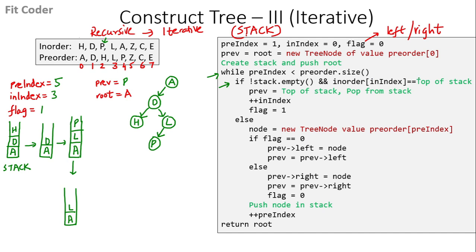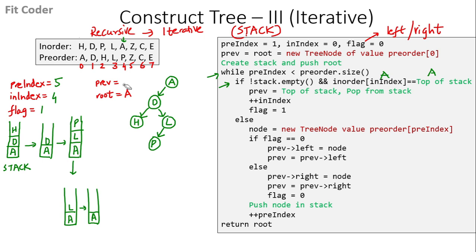In the next iteration, the top of the stack is L and the in-order index also points to L — equal. We set previous to L, pop from the stack, increment in-index, and set flag to 1. In the following iteration, the top of the stack is A and the in-order index points to A — equal. We set previous to A, pop from the stack (stack is now empty), increment in-index, and set flag to 1.